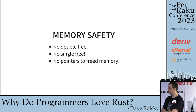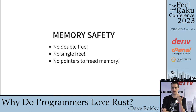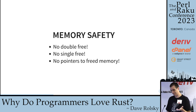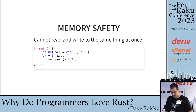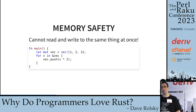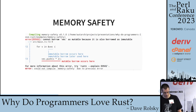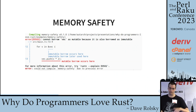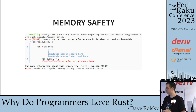Rust deallocates memory when a thing goes out of scope, which is really similar to Perl's DESTROY. You can fire off code at this point with a trait called drop — again, just like DESTROY. You cannot read and write to the same thing at once. In this case, we've made a mutable Vec and we try to iterate over it while also pushing into it. The compiler is very unhappy — it says there's an immutable borrow when we're reading, and then we try to mutably borrow when we write. It just won't let you do that.